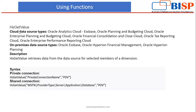First, I'll give a brief description about each function and through which database or data source it can be connected. The HSGetValue function is supported in Oracle Analytics Cloud Essbase, Oracle Planning and Budgeting Cloud, Oracle Enterprise Planning and Budgeting Cloud, Oracle Financial Consolidation and Close Cloud, Tax Reporting Cloud, and Enterprise Performance Reporting Cloud, as well as on-premise data source types like Essbase, Hyperion Financial Management (HFM), and Hyperion Planning.